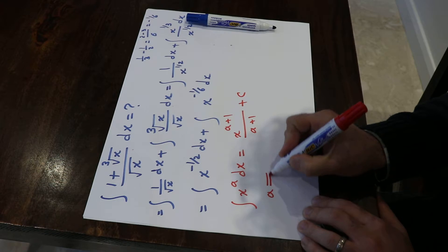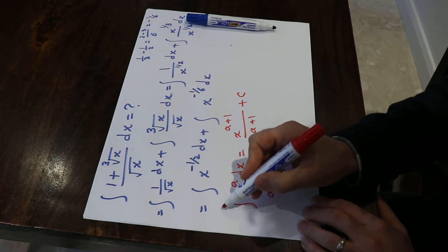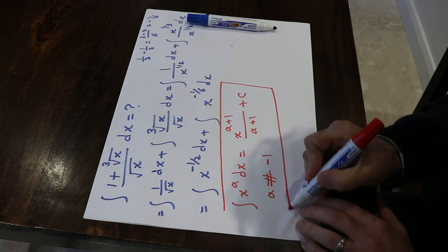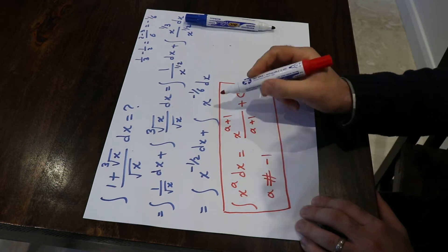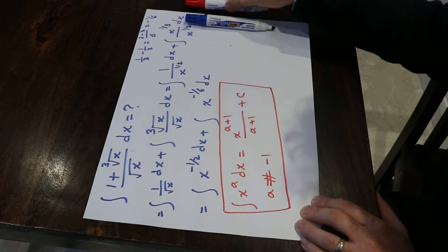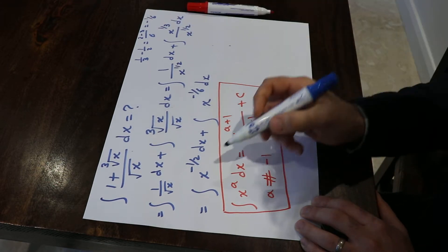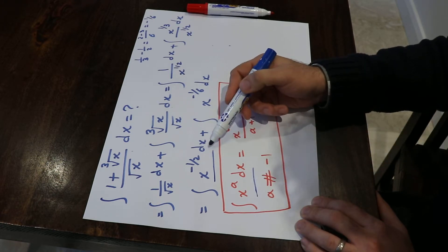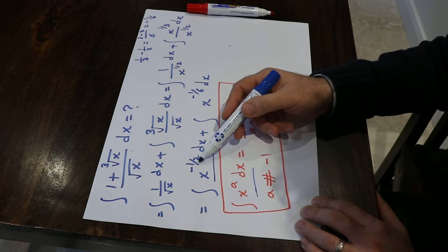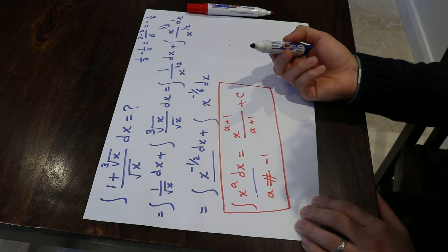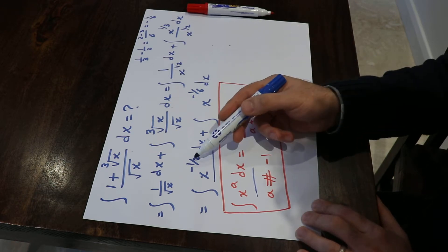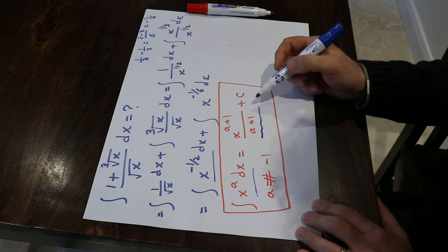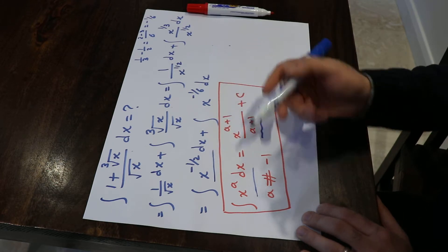Assuming a is not equal to minus 1. This is the formula you need to know to solve this integral. If you compare the first integral with this expression, you see they have the same format. In this case, a is equal to minus 1/2. That means I can use this formula to solve my integral.